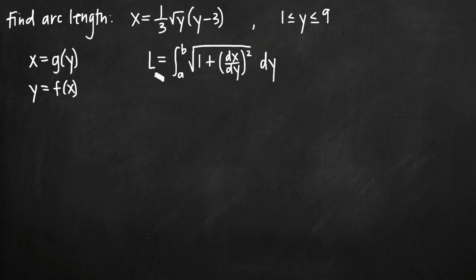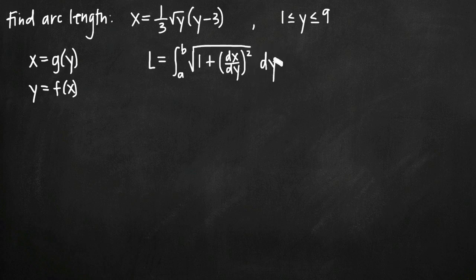Your arc length formula is going to be slightly different than the way it normally is. Normally you would have dy over dx — the derivative of y with respect to x — and dx telling you to integrate with respect to x. But in our case, because we have x equals g of y, we need to take the derivative of x with respect to y and integrate with respect to y, so we have dx over dy and dy. Those are the only two things that are different for our arc length formula.